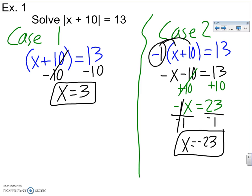There are my two answers, but I must check them. If I put a 3 here, 3 plus 10 is 13. The absolute value of 13 is 13. That's good. If I plug negative 23 in, negative 23 plus 10 is negative 13. But it's an absolute value sign that takes away the negative. So that really is 13 equals 13, which again is good. This problem has two answers.